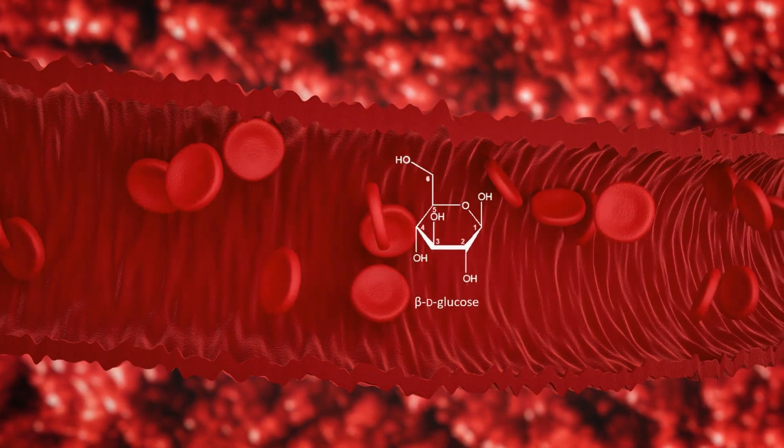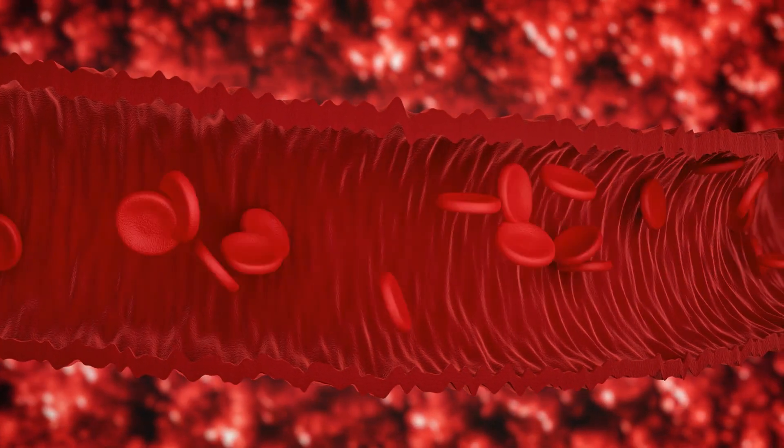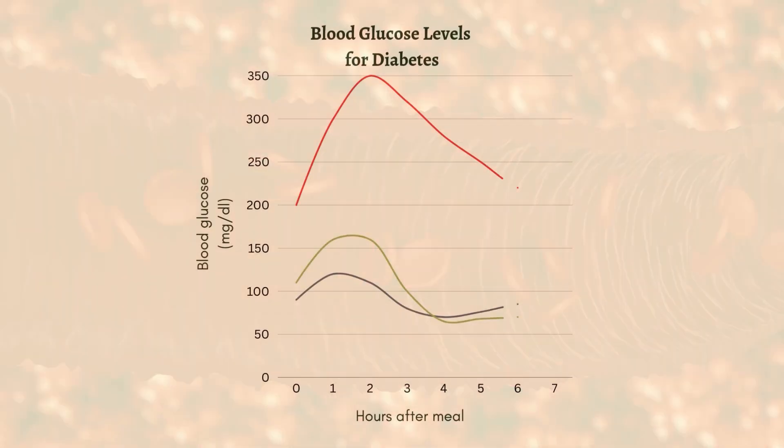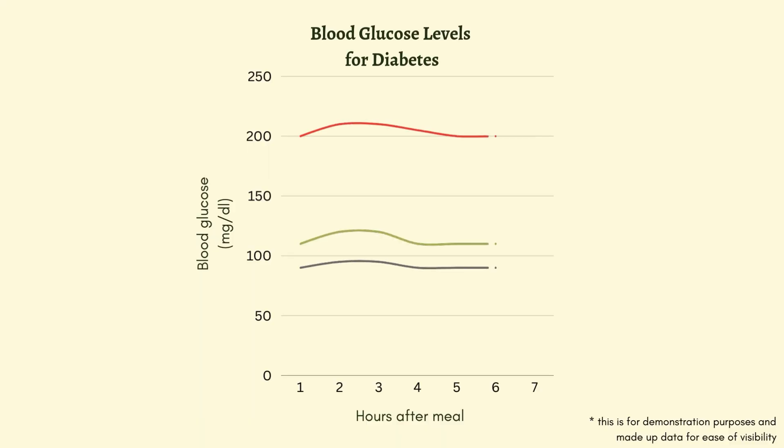For individuals with diabetes, controlling blood sugar levels is crucial. Traditional sugars can cause spikes in blood glucose, complicating management of the condition. Since L-Sugars are not metabolized, they do not raise blood glucose levels, making them a suitable sweetener for people with diabetes.